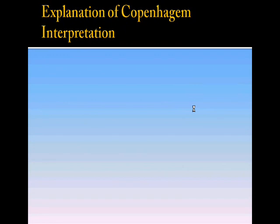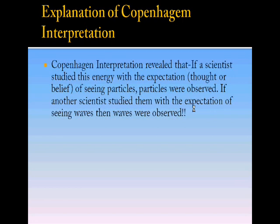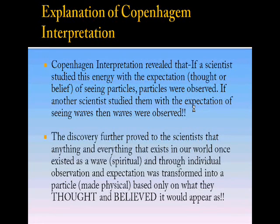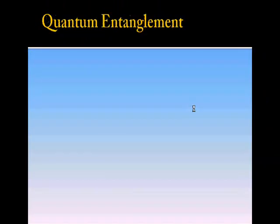Let us understand the Copenhagen interpretation a little bit more. The interpretation revealed that if a scientist studied this energy with the perception, thought, or belief of seeing particles, particles were observed. If another scientist studied them with the expectation of seeing waves, then waves were observed. This discovery further proved to the scientists that anything and everything that exists in our world once existed as a wave—that is, on a spiritually real plane—and through individual observation and expectation, was transformed into particles made materialistic or physical based on only what they thought and believed it would appear as.